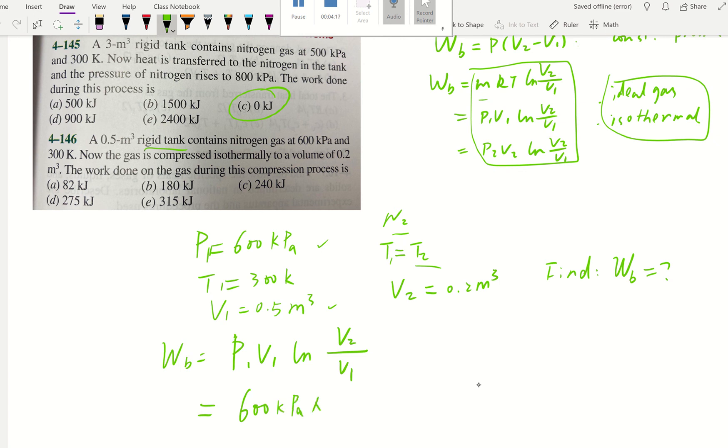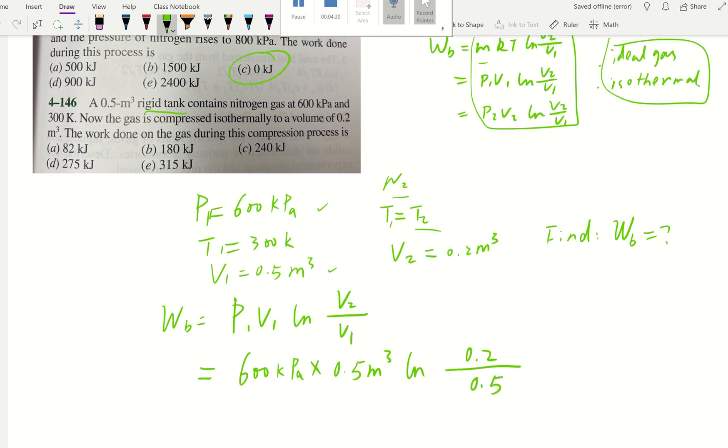So let's go with P1 V1 natural log V2 over V1. So we do know initial pressure is 600 kPa and the volume, initial volume is 0.5 m3. And natural log V2, 0.2 m3 over 0.5. So for this equation, you didn't even use the temperature. That's a noise maker.